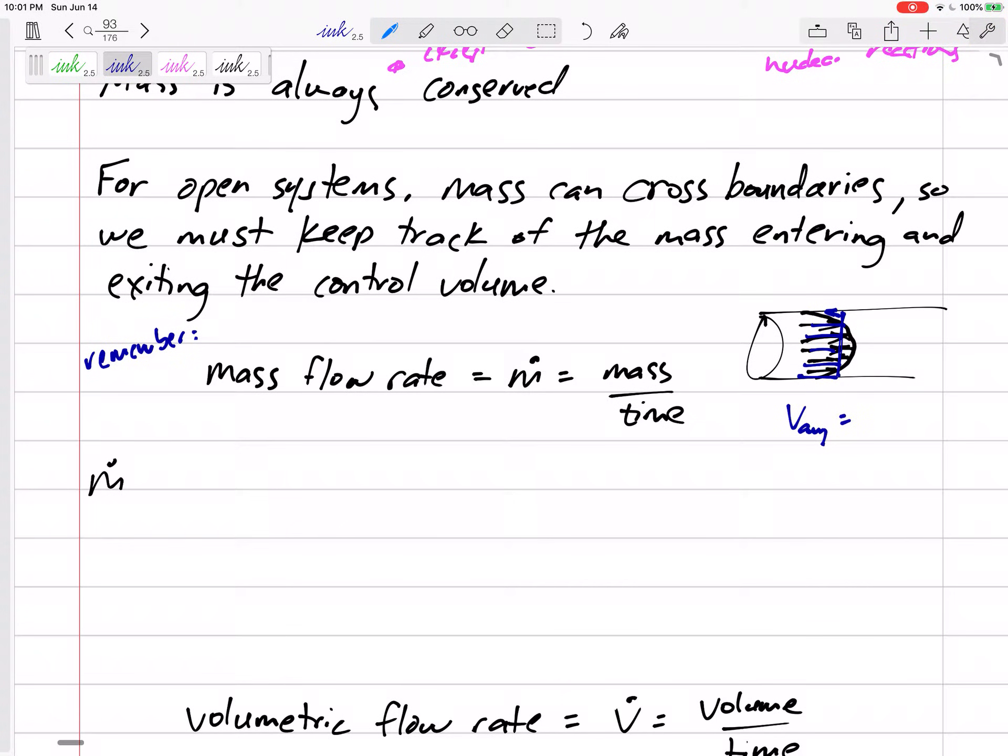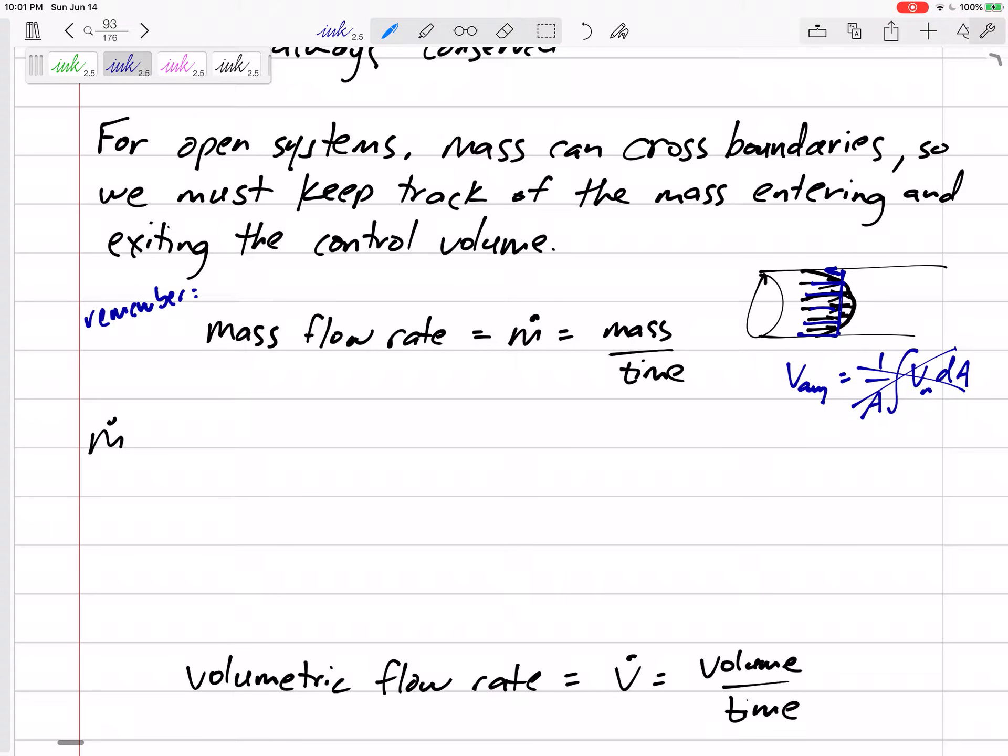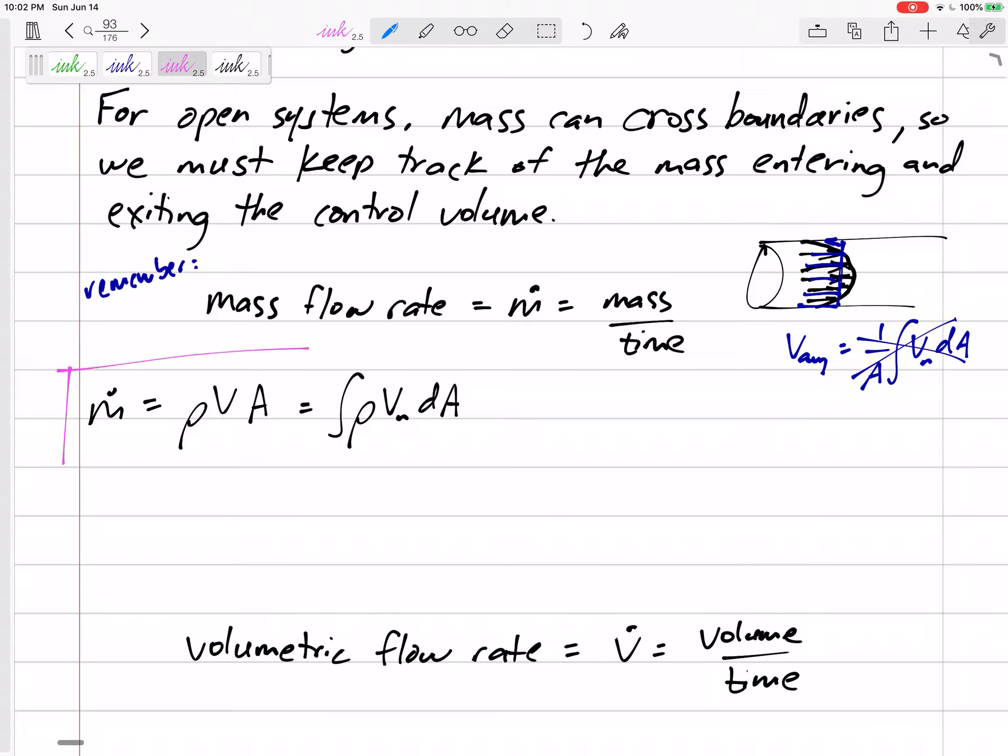The average would technically be something like one over the cross-sectional area times the normal velocity integrated over that cross-sectional area. We won't have to do that, but if we know the average velocity of the inlet outlet, then the mass flow rate will be rho v a. Technically, it might be like the integral of rho v normal d a, the velocity that is perpendicular to the cross-sectional area.